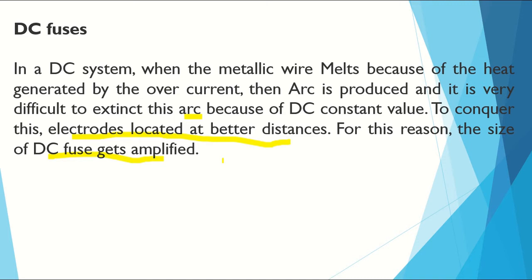DC is a constant source, unlike AC. AC oscillates between high and low values and reaches zero, but for DC — whether 24V or 250V — the voltage is constant. So it is very difficult to extinguish the arc. To prevent this, electrodes are kept at a safer distance, making the size of DC fuses much bigger compared to AC fuses.